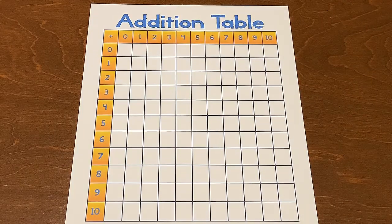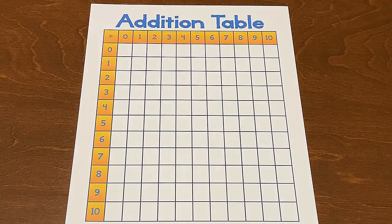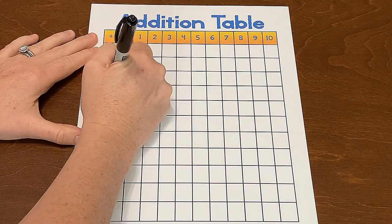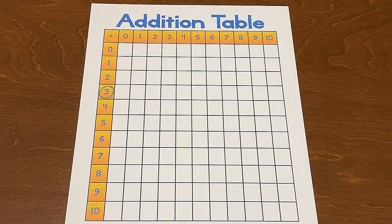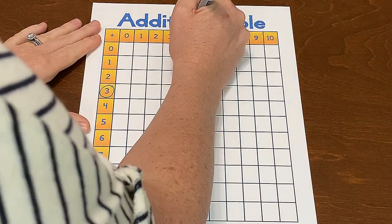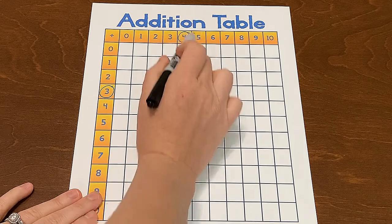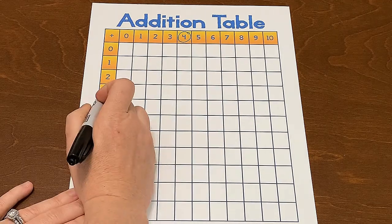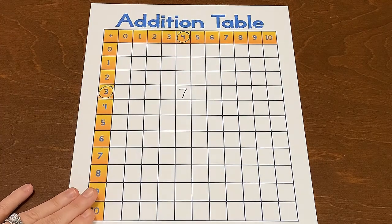I can take this knowledge and even fill in a blank addition table. Let's go back and think about the problem 3 plus 4. First, I start in my row and I'm going to circle the number 3. Then I'm going to find my second addend, which was the number 4, in the column. Remember, where my row and my column meet would be the sum. The sum of 3 plus 4 is 7, so 7 goes in the box there.